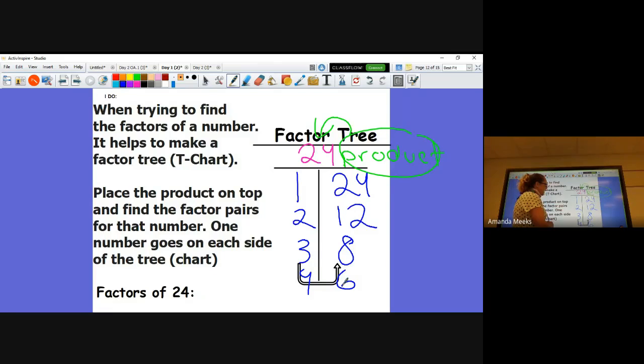Now that's 6. I do not need to rewrite 6. I already have 6 on my board. I have completed my factor tree. Now I have 1 times 24, 2 times 12, 3 times 8, and 4 times 6. These are my factor pairs for the product of 24.